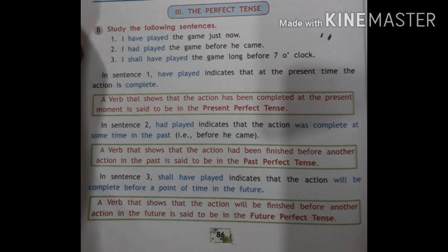Part three: the perfect tense. Study the following sentences. First: 'I have played the game just now.' Second: 'I had played the game before he came.' Number three: 'I shall have played the game long before seven o'clock.' In sentence one, 'have played' indicates that at the present time the action is complete — this is the present perfect tense. In sentence two, 'had played' indicates the action was completed at some time in the past before another action — this is the past perfect tense.